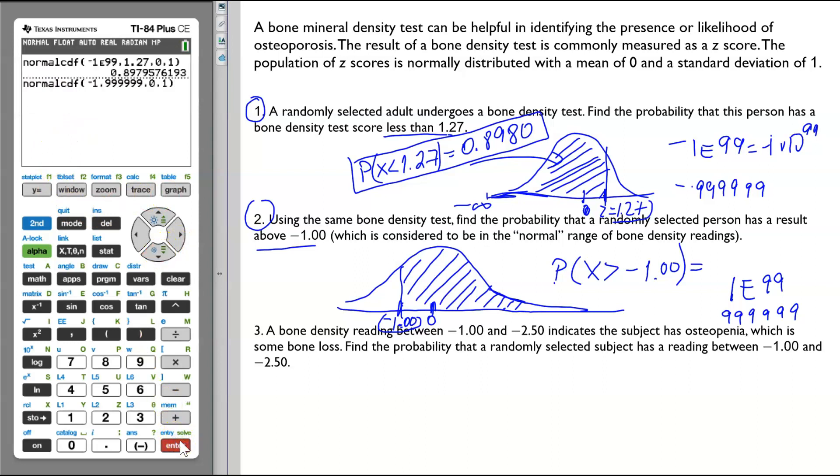Enter, enter again. Then, the area to the right of the z-score of negative 1 is equal to 0.8413, rounded to 4 decimals.